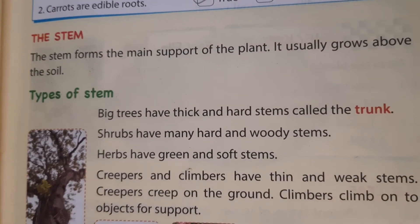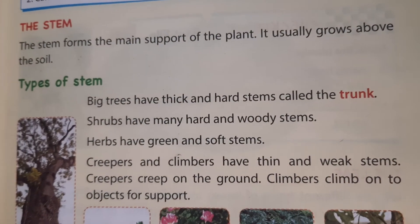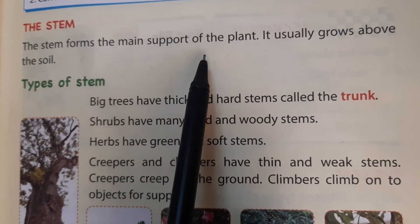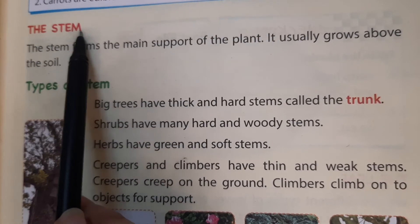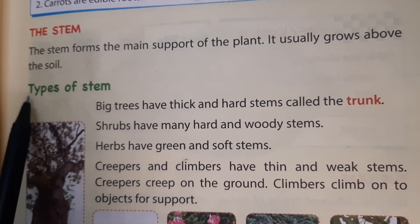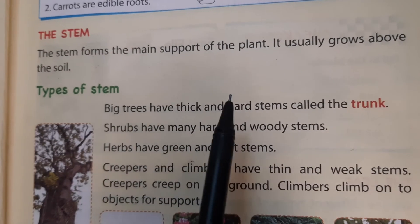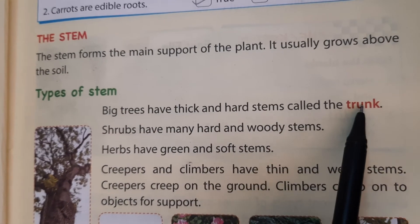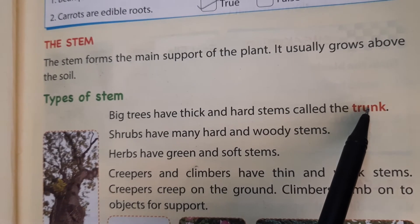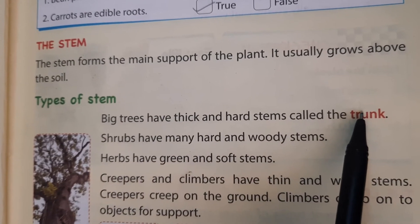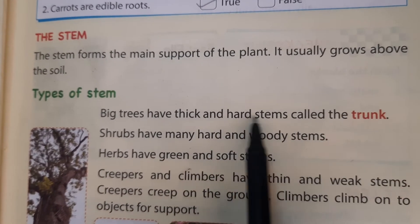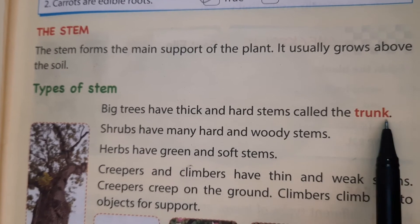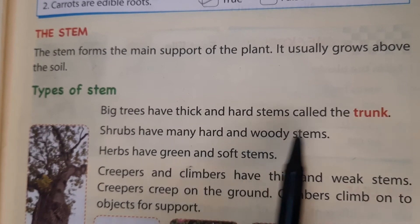Now the next part of the chapter is the stem. Stem is the part of the plant that grows above the soil. Now we will study the types of stem. Big trees have a thick and hard stem called a trunk — you must have seen very big trees with a very thick, hard stem. That hard and thick stem in trees is called the trunk. Shrubs have a hard and woody stem.